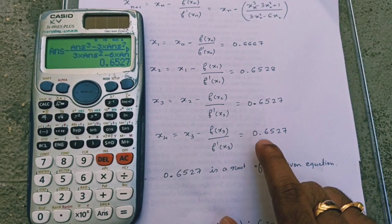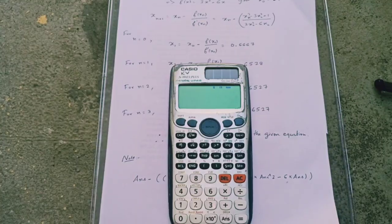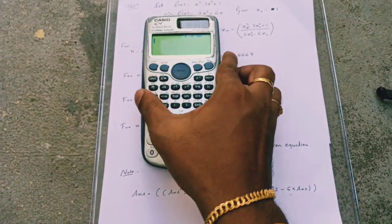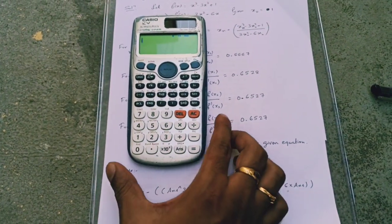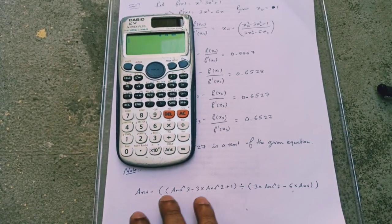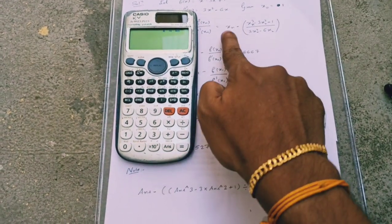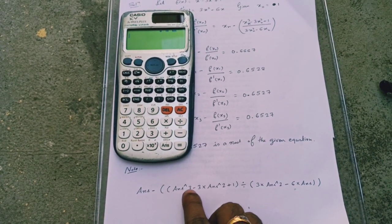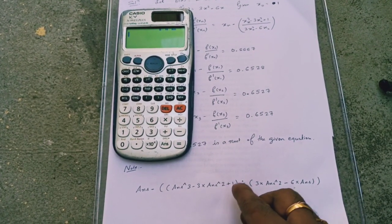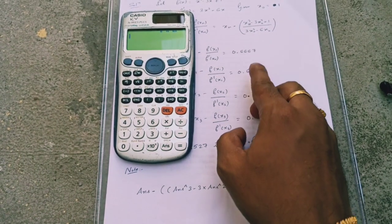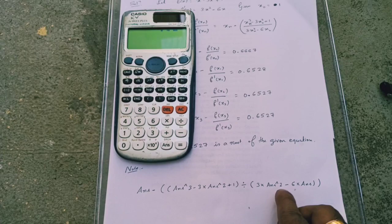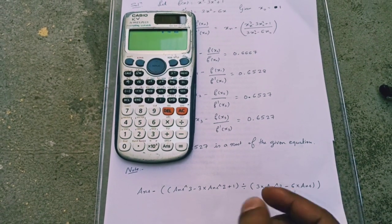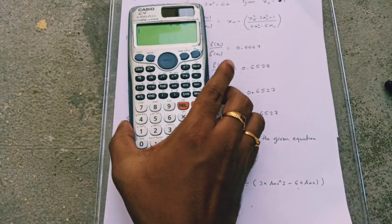In this trick I used 991 ES calculator. To use the same trick in lower level calculators you need to type this formula using BODMAS rule. Type answer minus bracket open for this term, bracket open for the numerator answer cube minus 3 into answer squared plus 1 bracket close for the numerator, divided by bracket open for the denominator 3 into answer squared minus 6 into answer bracket close for the denominator, and bracket close for the term. If you use this formula in any other calculator or even in this calculator you will get the solution.